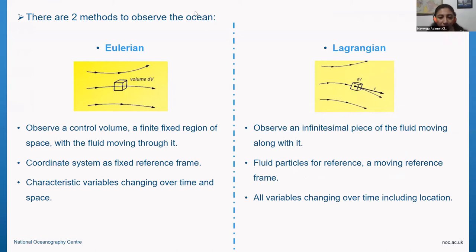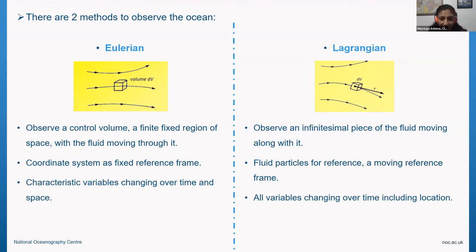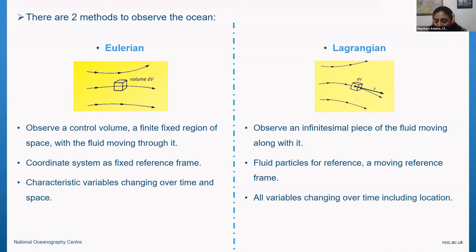There are two methods to observe the ocean. The Eulerian framework is the most common one: you sit in a spot and observe a finite volume of water. It changes for two reasons — local changes and because flow is coming through it, bringing other water masses with different properties. In this framework, the coordinate reference system is fixed, and characteristics or variables change over time and in space across different grid cells.